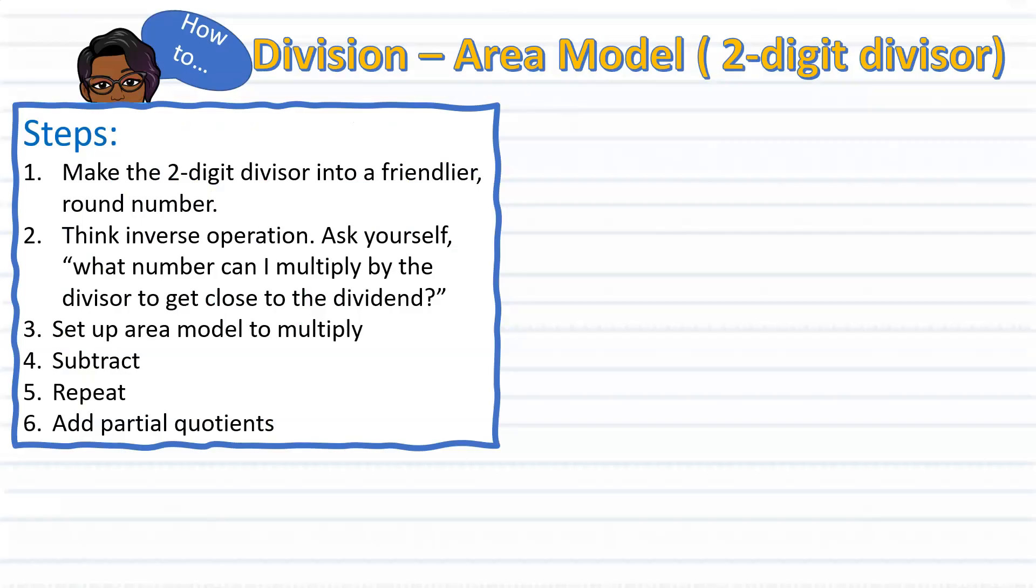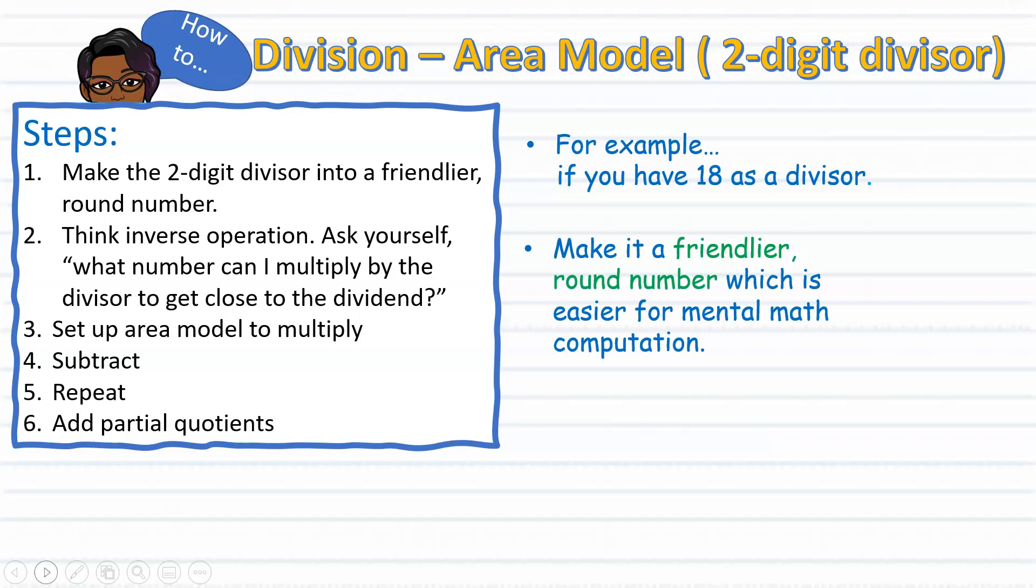So, let's get into it. Here we have an outline of steps on how to divide using the area model. When dividing with a two-digit divisor, encourage your child to use friendlier round numbers. For example, if you have 18 as a divisor, make it a friendlier round number, which will make it easier for mental math computation. 18? Instead, think 20.